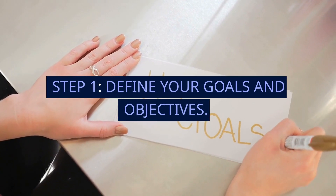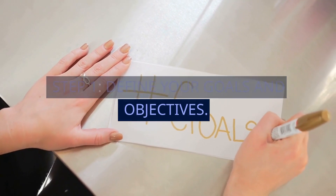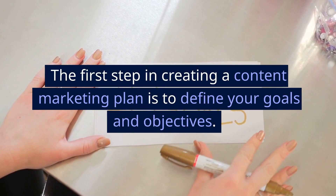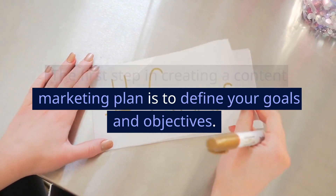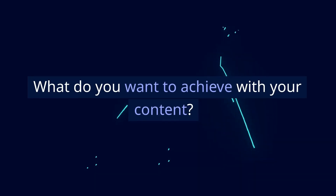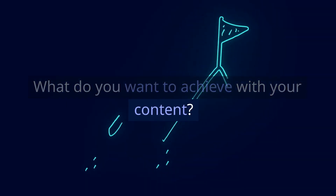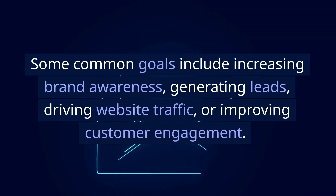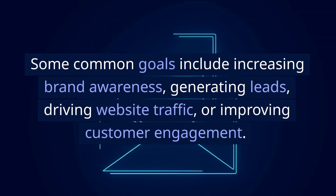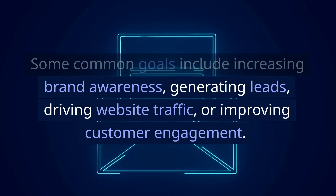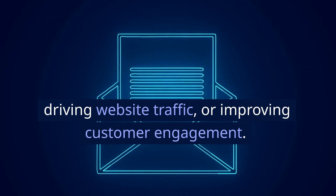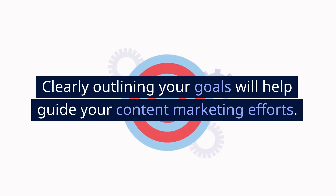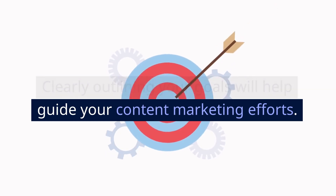Step 1: Define Your Goals and Objectives. The first step in creating a content marketing plan is to define your goals and objectives. What do you want to achieve with your content? Some common goals include increasing brand awareness, generating leads, driving website traffic, or improving customer engagement. Clearly outlining your goals will help guide your content marketing efforts.